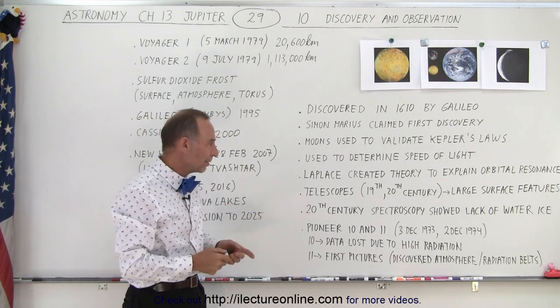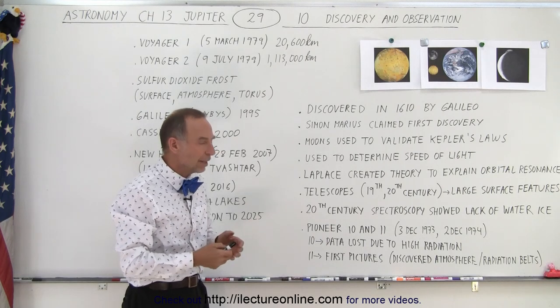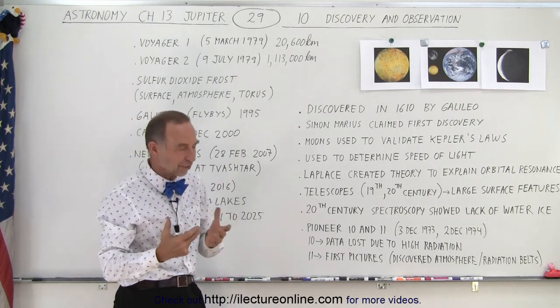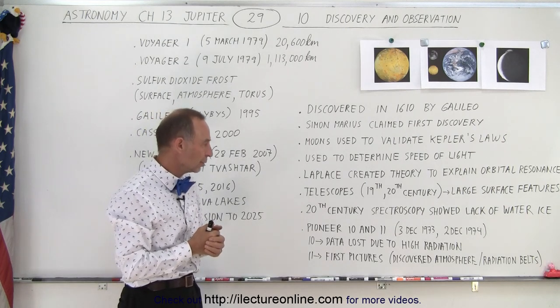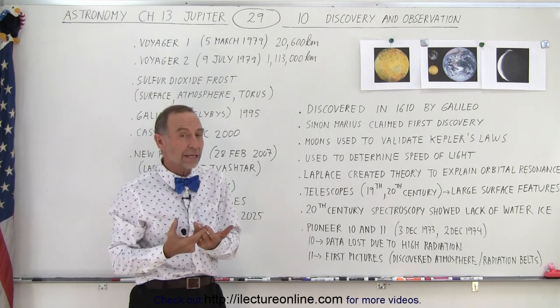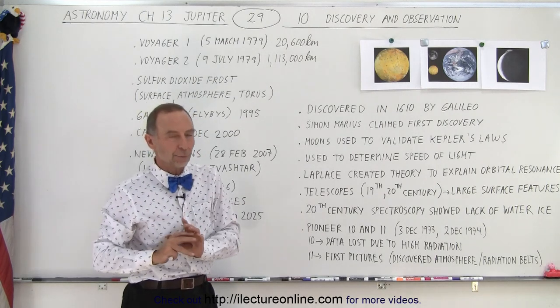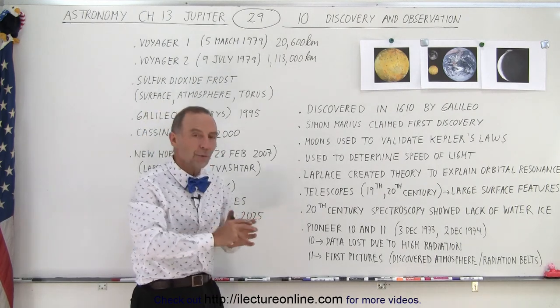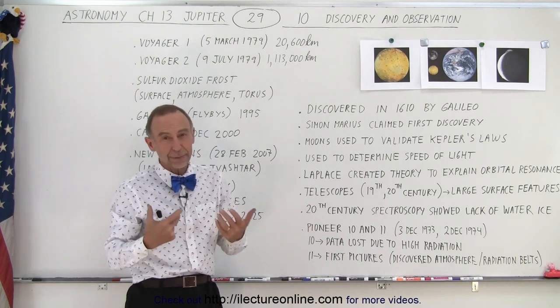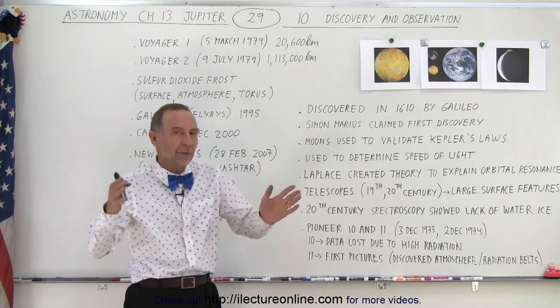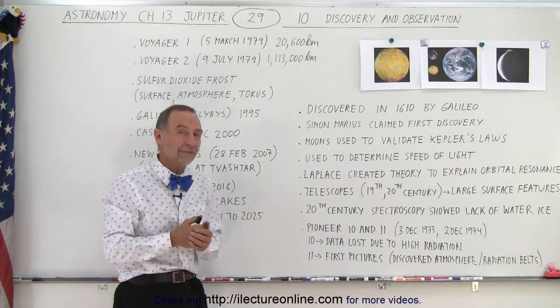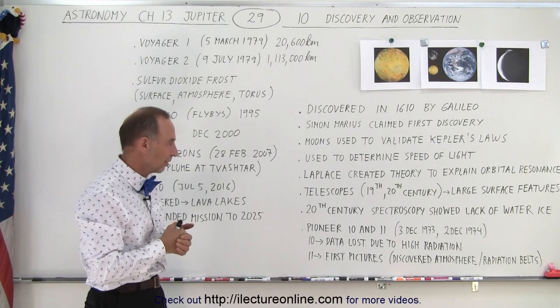As the telescopes got better in the 19th and 20th century, they began to see large surface features, so they began to see some basic features on the moon. And then in the 20th century, they started using spectroscopy, and then they realized that Io was essentially devoid of water ice, which was extremely unusual. So using spectroscopy, we're typically able to figure out what kind of elements are present in large enough quantities. And so they did not find any evidence of water ice being present in Io.